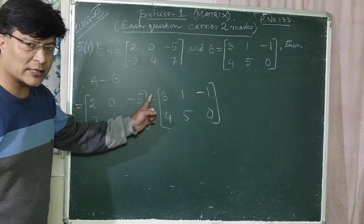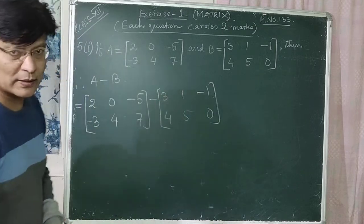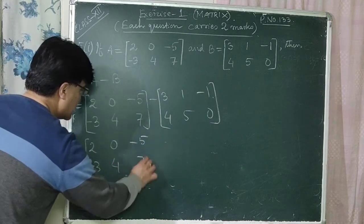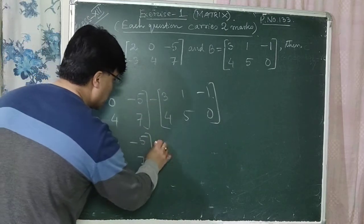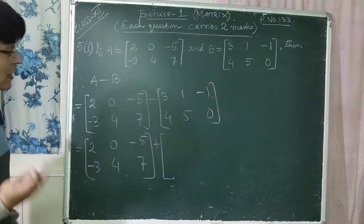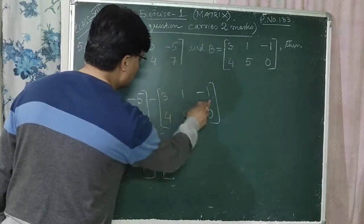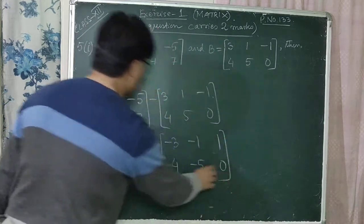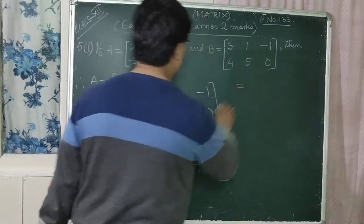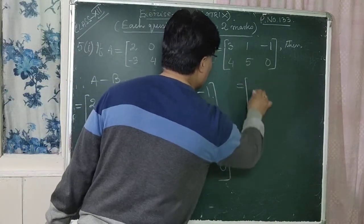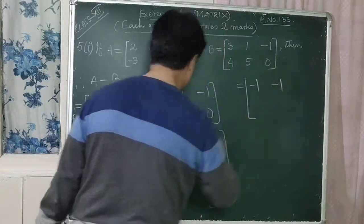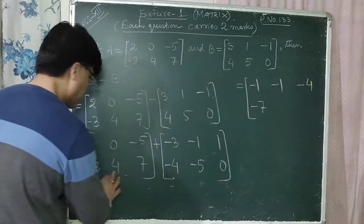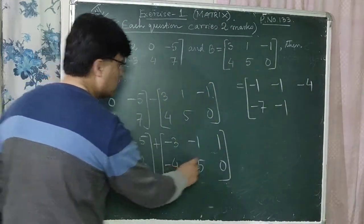Since this is minus, we multiply all elements of B by minus one. So A minus B equals the first matrix plus minus one times B: minus 1 times [3,1,-1; 4,5,0] gives [-3,-1,1; -4,-5,0]. Adding: 2+(-3)=-1, 0+(-1)=-1, -5+1=-4, -3+(-4)=-7, 4+(-5)=-1, 7+0=7. So A minus B is [-1,-1,-4; -7,-1,7].